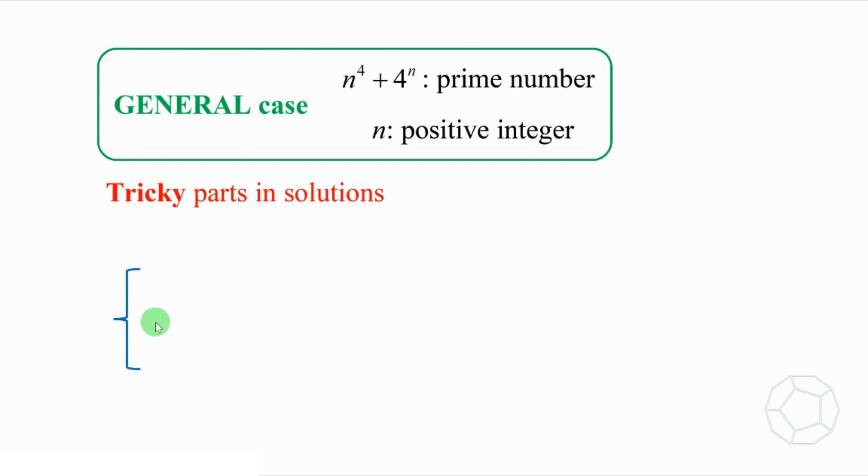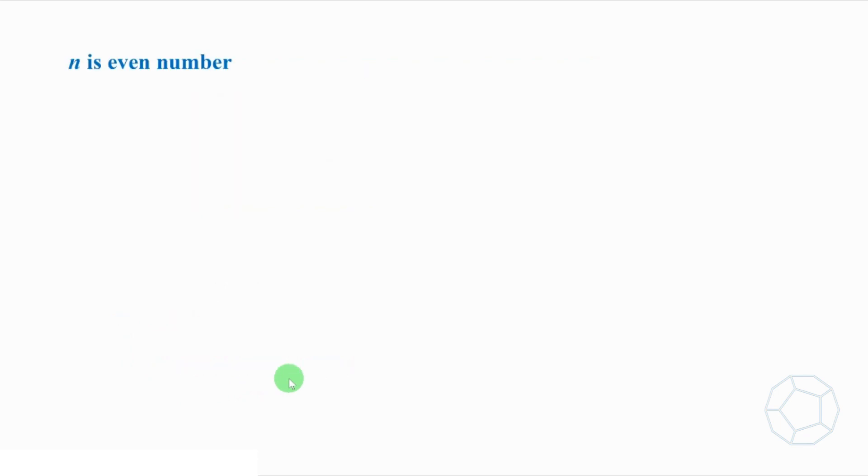The first one is when n is an even number. Then we move on to n equals 1, and we end up with all other odd values of n. To start with, when n is an even number, both n to the power 4 and 4 to the power n are also even. So, their sum is always an even number. It has a factor 2, so it is not a prime number. We can also call it a composite number.